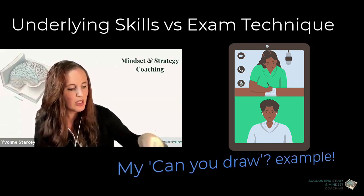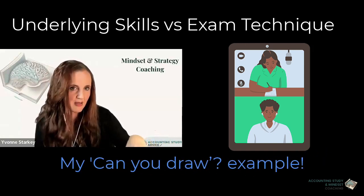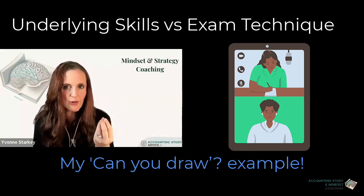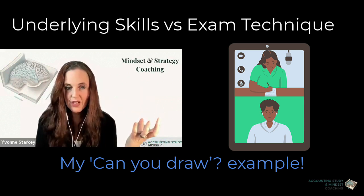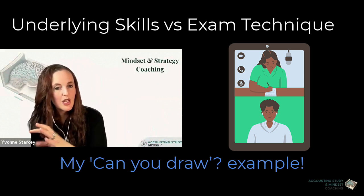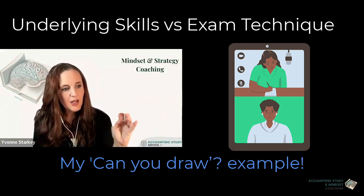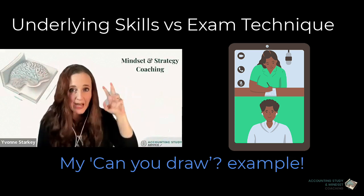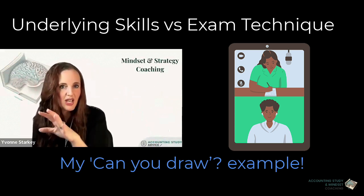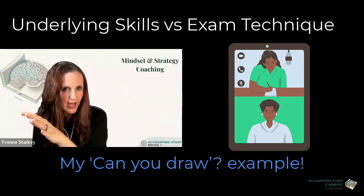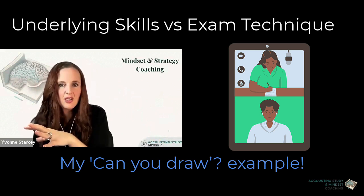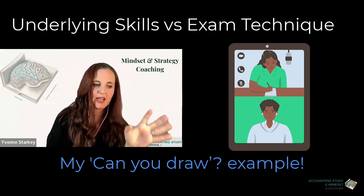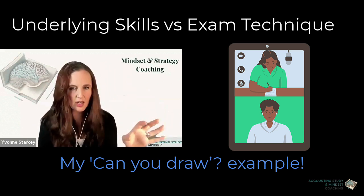If I said to you that you need to draw a picture of a cat, there are a few underlying skills you need. One is you need to know what a cat looks like, and two, you need to be able to draw. What students do is they say, the most important thing is to know what a cat looks like — get a lot of detail about the cat — and then a week before the test, practice drawing the cat. And if they can't draw it, they assume they don't know what a cat looks like.